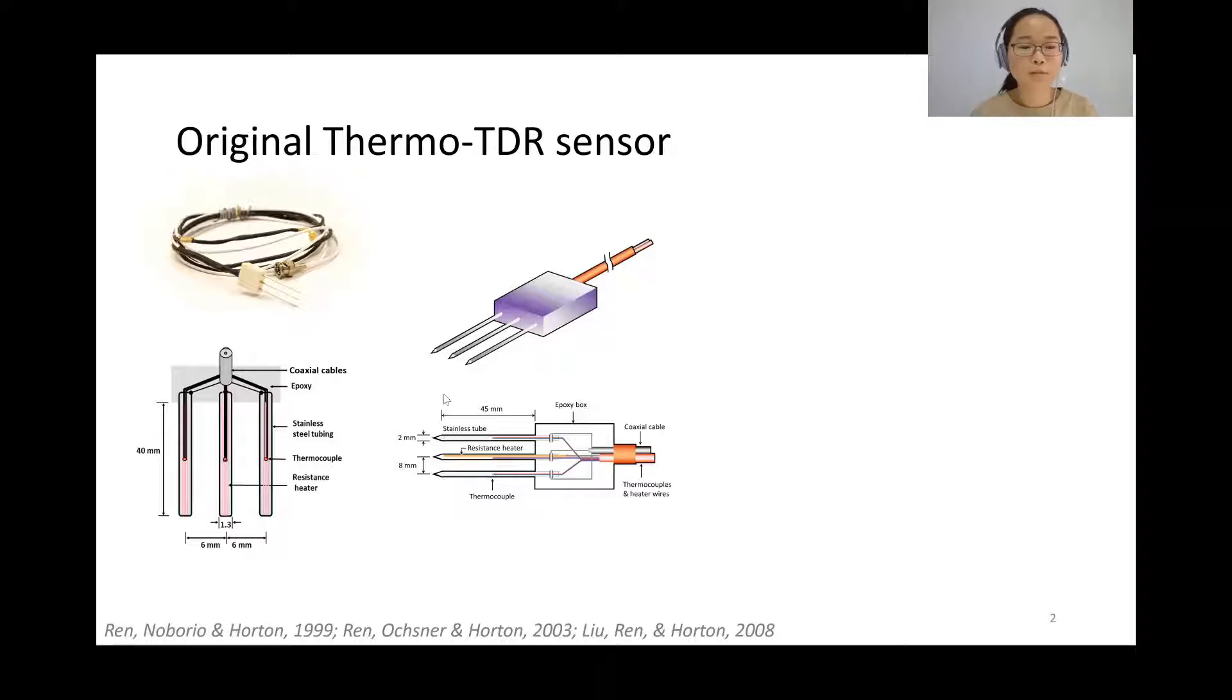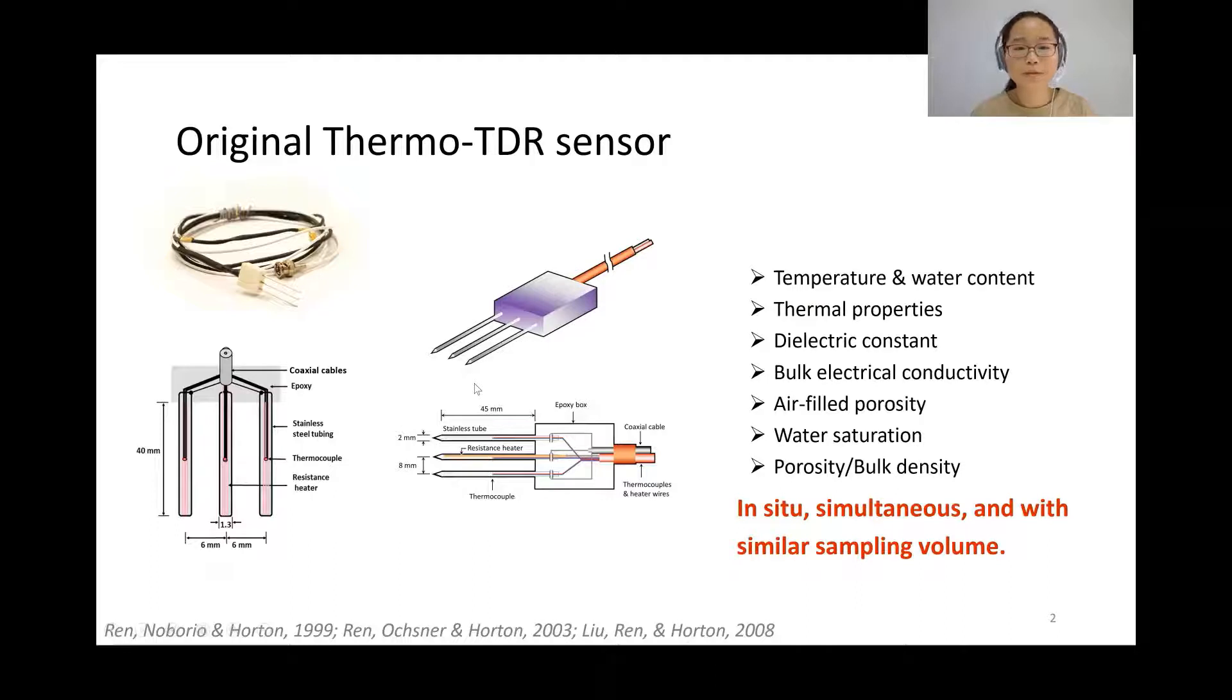All these three probes are connected to the coaxial cables to get TDR waveforms. From all these measurements, a thermal TDR sensor can get soil temperature, water content, soil thermal properties, the dielectric constant, and electrical conductivity.